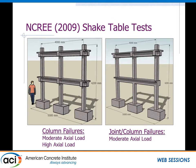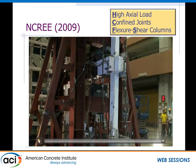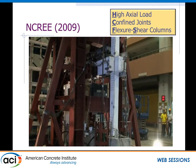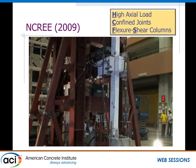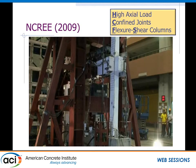Now I'd like to show another test — the most recent set done at NCRE. This is a two-story frame, with a series of tests looking at both joint failures and column failures. I want to focus on the high-axial-load test focused on column failures. There's a very large steel frame that gets in the way, but watch that end column during the test. Notice in this case how quickly it fails — it went from a shear failure straight into an axial failure and shortening.